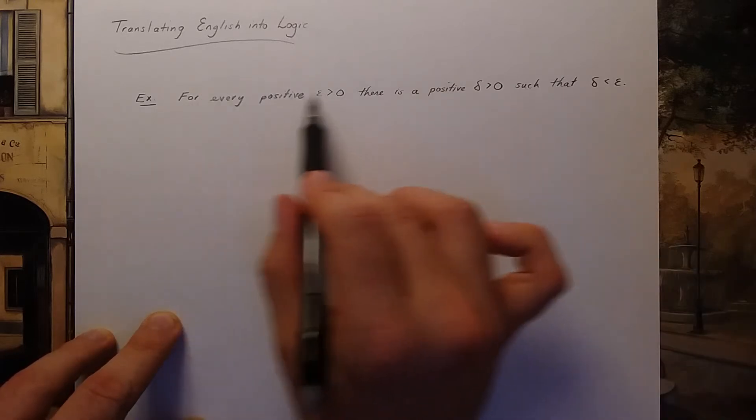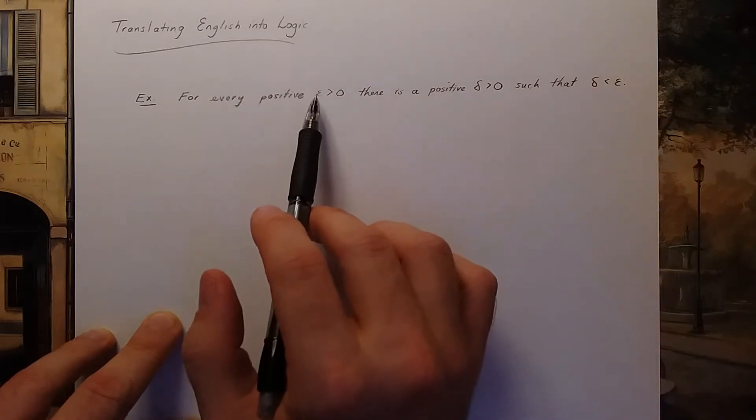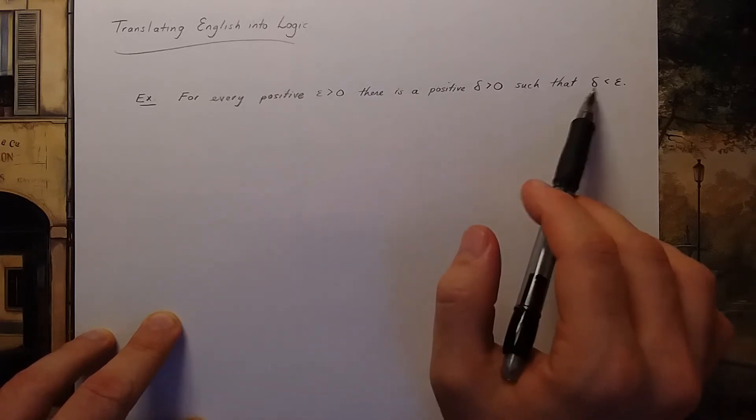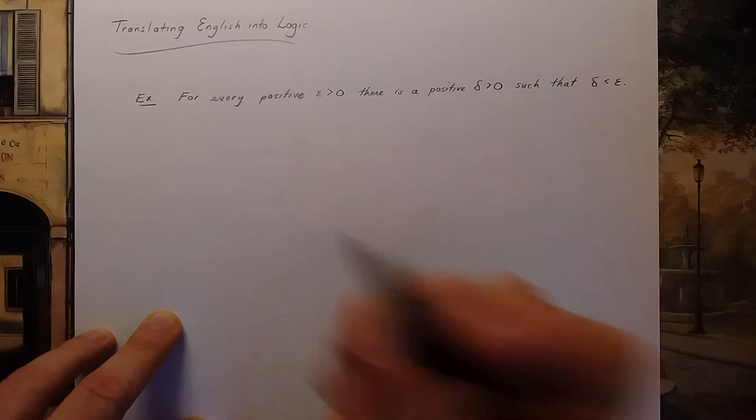This statement actually happens to be true. It says if you pick a positive number, if you select a positive number epsilon, there's a second positive number that you can find that's smaller than your first one. So this happens to be a true statement.